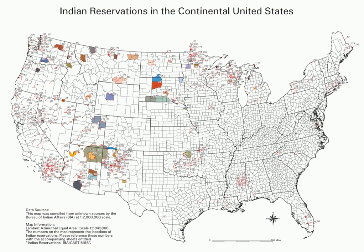In addition, because of past land allotments leading to some sales to non-Native Americans, some reservations are severely fragmented, with each piece of tribal, individual, and privately held land being a separate enclave. This jumble of private and public real estate creates significant administrative, political, and legal difficulties.